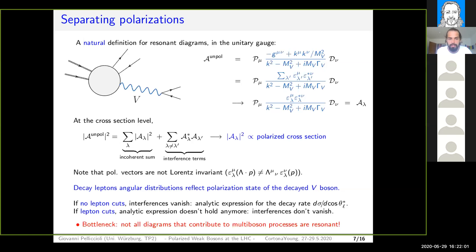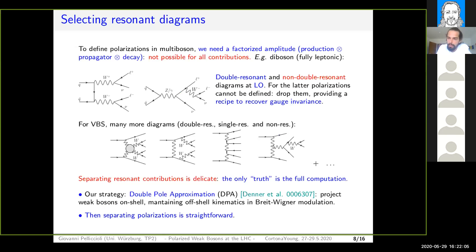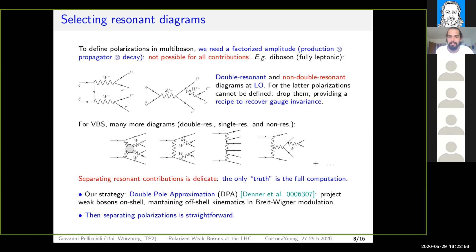There is a further bottleneck: not all diagrams contributing to multi-boson topologies are resonant. Already in boson pair production — like the leading order contribution to W+W- production in the fully leptonic decay channel — one diagram features two resonances, while another features only one W resonance. For the latter diagram, the W+ polarization cannot be disentangled. The only way forward is to select just the doubly-resonant diagrams, which however has the bad behavior of breaking gauge invariance. So we need a recipe to recover electroweak SU(2)×U(1) gauge invariance in this selection of resonant diagrams.